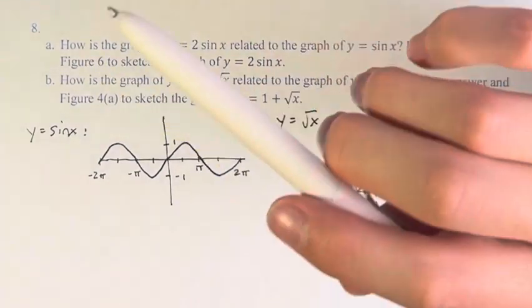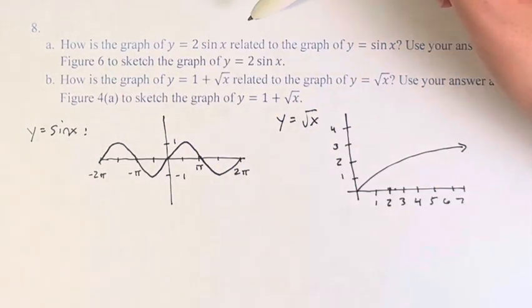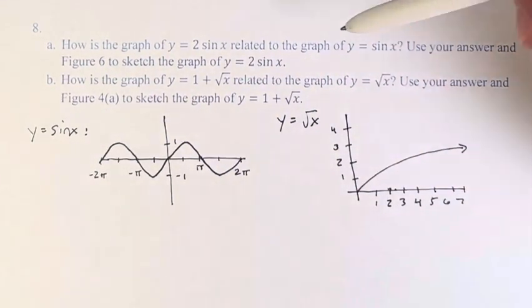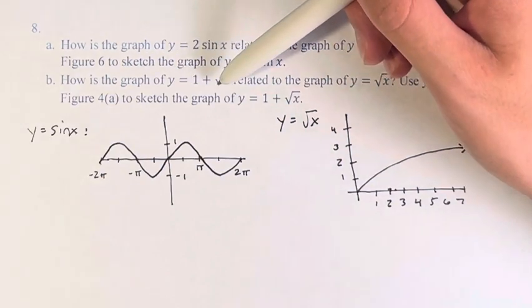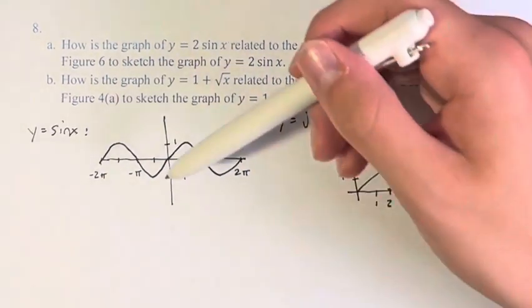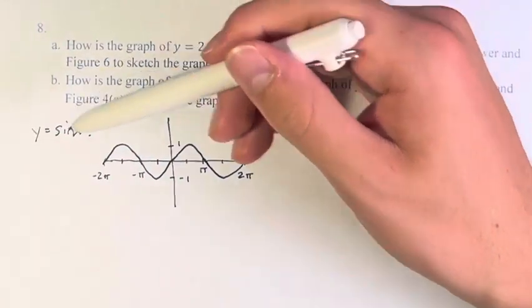In this problem, we are comparing the graphs of y equals 2 sine x to y equals sine x, and y equals 1 plus the square root of x to y equals the square root of x. So I have these functions graphed right here, so let's first start with A.